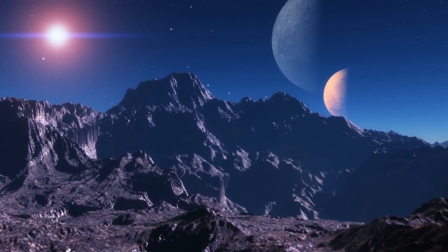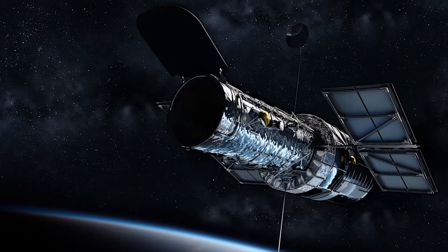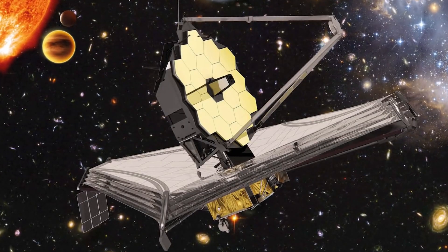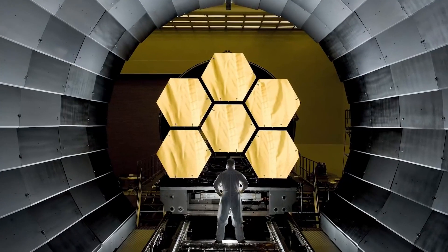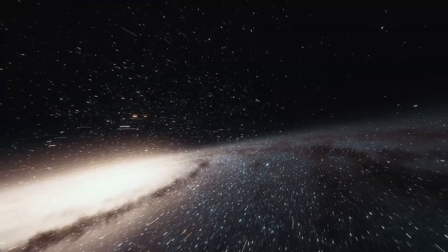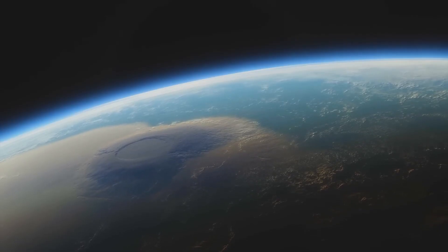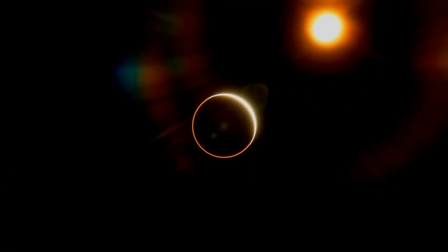A pair of rocky planets orbiting the star LP 890-9, also known as Speculoos 2, seem likely to be in the habitable zone and one of them could be the second most habitable exoplanet discovered so far. Based on earlier findings by NASA's Transiting Exoplanet Survey Satellite TESS, researchers at the University of Birmingham in the UK used their Speculoos Telescope, which stands for Search for Habitable Planets Eclipsing Ultra-Cool Stars, to confirm the habitability of these two planets.